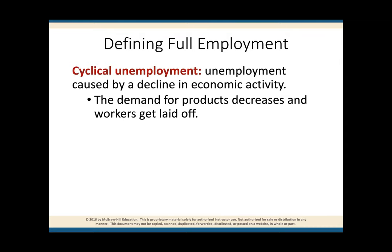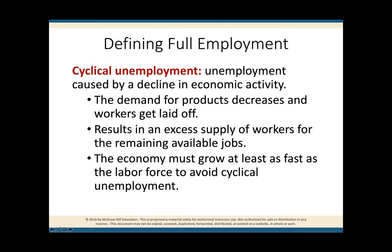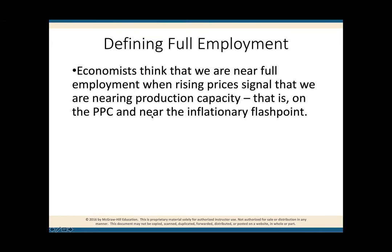The only way we can get rid of cyclical unemployment is for the economy to grow as fast as the labor force to avoid cyclical unemployment. President Trump signed a bill to decrease deregulations of certain companies — companies don't have to comply with certain laws — making it easier for companies to continue to produce without having to comply with government regulations. The reason is that we are desperately trying to deal with cyclical unemployment, a very serious situation.